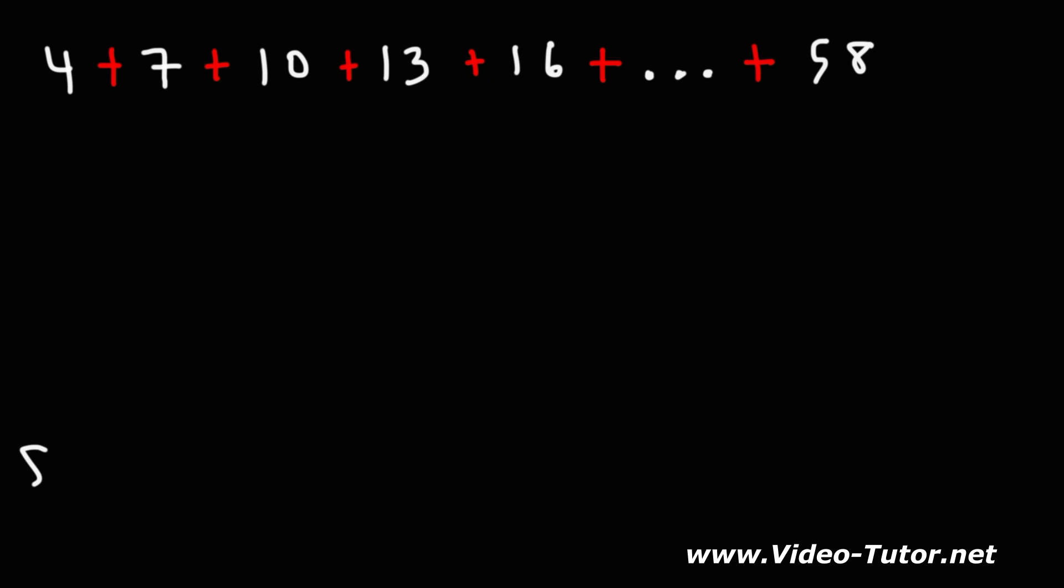Here is the formula we need to calculate the sum of an arithmetic series. It's going to be the first term, a sub 1, plus the last term, a sub n, divided by 2. So it's the average of the first and last terms multiplied by the number of terms.